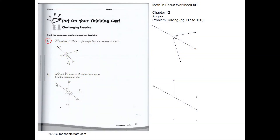Challenging practice. Question 1. GJ is a line and LHK is a right angle. Find the measure of angle LHJ.